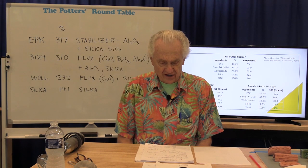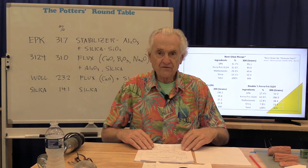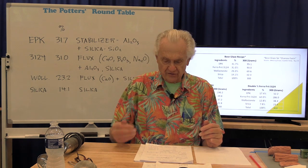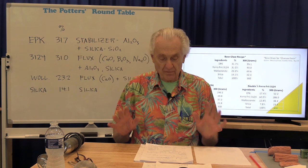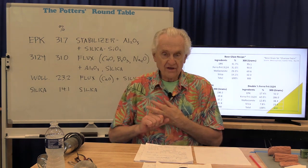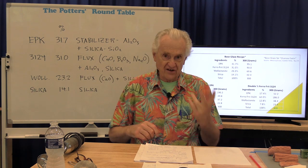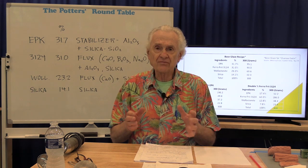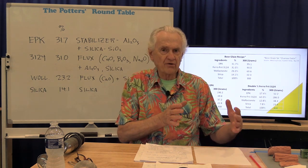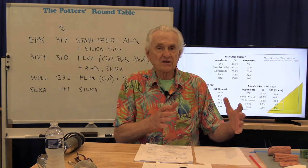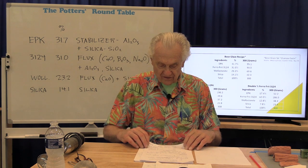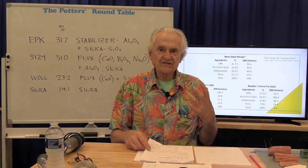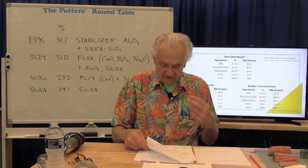For this particular exercise, the general procedure is: we take a recipe for a base glaze with four ingredients, and then one at a time we double the percentage of each ingredient. We'll end up with five glaze batches — the original recipe, and then a batch with each ingredient doubled in turn. When we double each ingredient, we keep the remaining ingredients in the same proportions. The total amount will decrease, but the proportions among the remaining ingredients stay the same. The goal is to see the effect of increasing each ingredient and what it contributes to the functioning of the glaze.